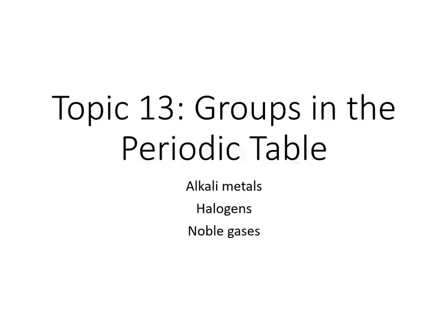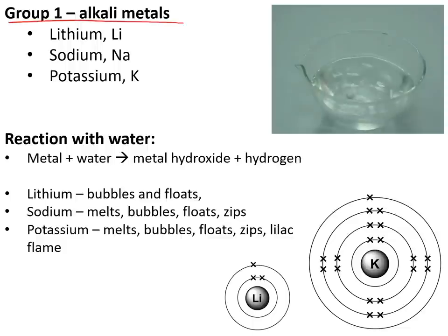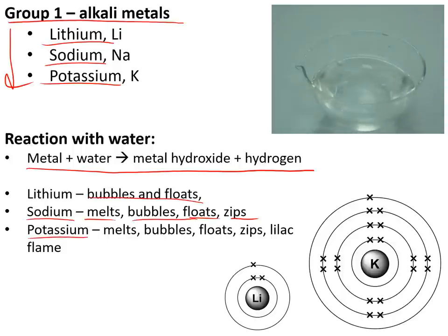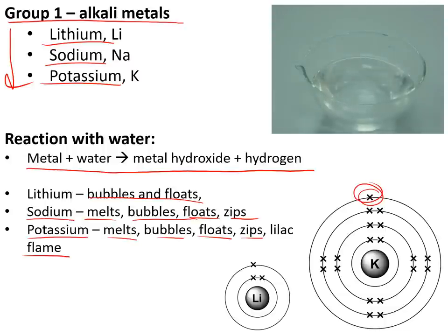Topic 13: groups in the periodic table — alkali metals, halogens, and noble gases. Group 1 is the alkali metals: lithium, sodium, and potassium. They all react with water to make metal hydroxide and hydrogen. They get more reactive going down the group — lithium just bubbles and floats, sodium melts, bubbles, floats and zips about the surface, and potassium also makes a lilac flame. This is because potassium's outer electron is further from the nucleus, so it is less attracted and more easily removed, making it more reactive.